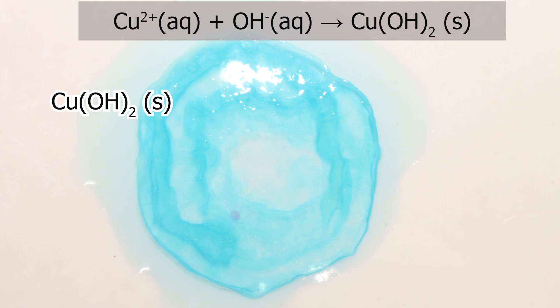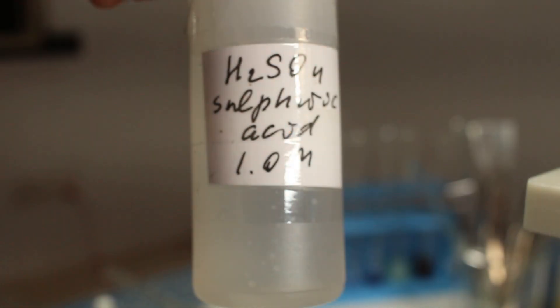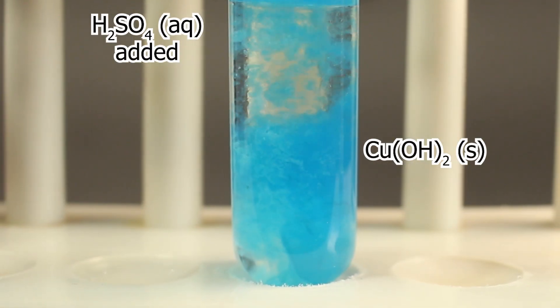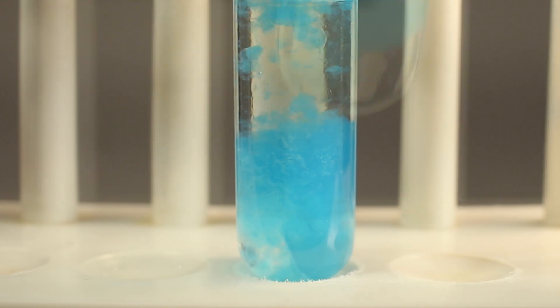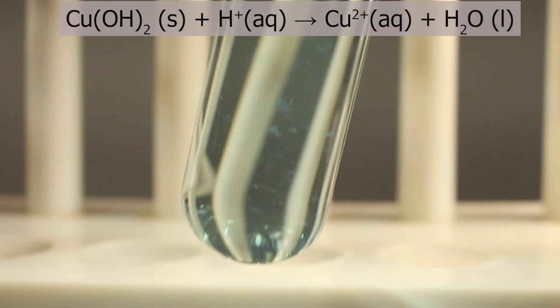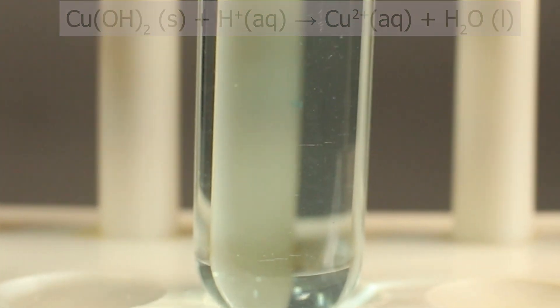Copper ions form insoluble copper II hydroxide in alkaline medium. On addition of acid we reverse the process. Hydrogen ions from acid form water reacting with hydroxide ions, and aqueous copper II ions are back again.